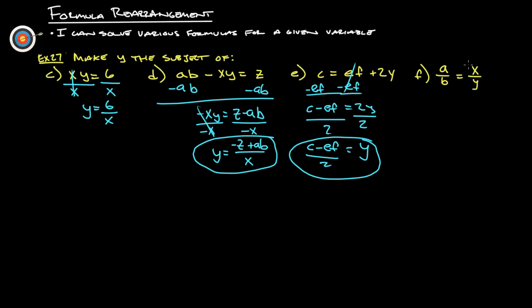This one here, we have a fraction equals another fraction. Pretty much always our best first bet here is to cross multiply. Do cross products. So we know that a times y equals b times x, bx. And then we've got to solve for y. So we've got to divide both sides by a. So we get y equals bx over a.